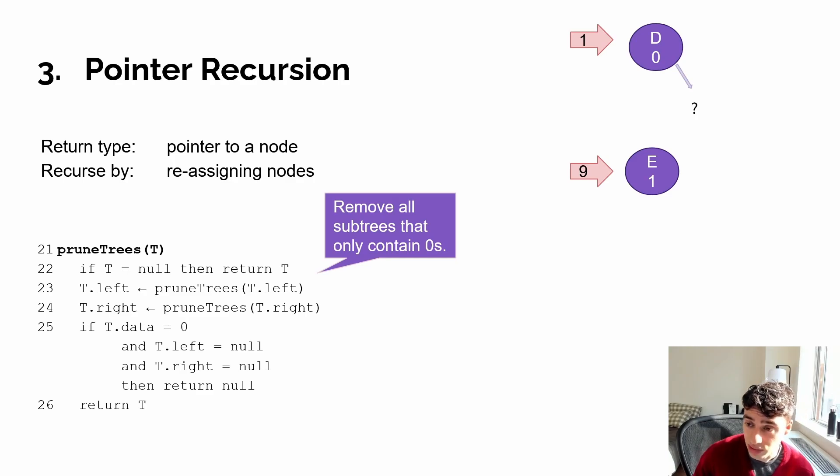And then whether or not its value is zero. Now since its value is one, it is not returned as null, and is actually returning the node itself. So now D's right assignment would be completed, reassigning the node that was originally there.